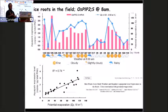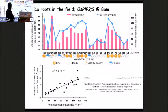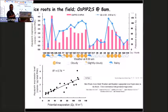Similar observations exist in other species. In rice, the expression of a PIP plasma membrane aquaporin correlated with potential evaporation over many days — a good correlation between expression level in roots and potential evaporation recorded at 8 a.m. on the day expression was measured, again suggesting a link between leaf evaporation and root hydraulic conductance.